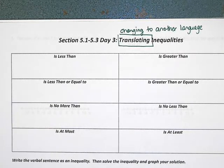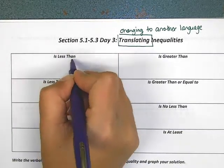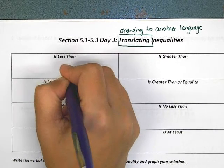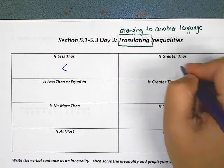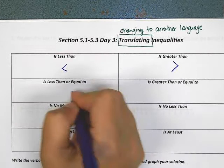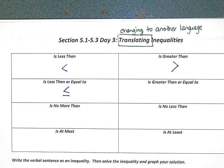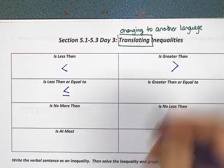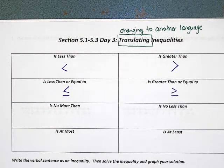Let's start with what these words actually mean. If you see the combination of words 'is less than,' you know that it means a less than symbol. If you see 'is greater than,' you know that it means a greater than symbol. If you see 'is less than or equal to,' that means a less than or equal to symbol. And 'is greater than or equal to' means a greater than or equal to symbol.